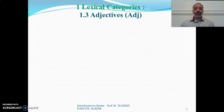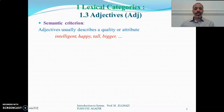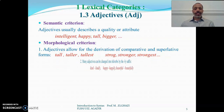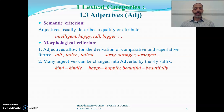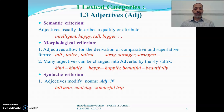The third kind of lexical category is the adjective. Semantically, adjectives normally describe a quality or attribute, like 'intelligent', 'happy', 'tall', 'bigger'. Morphologically, adjectives allow for the derivation of comparatives and superlatives — 'tall', 'taller', 'tallest'; 'strong', 'stronger', 'strongest'. Many adjectives can also be changed into adverbs by the addition of the suffix -ly, as in 'kind' becomes 'kindly', 'beautifully' from 'beautiful'. At the syntactic level, adjectives modify nouns and occur before them.